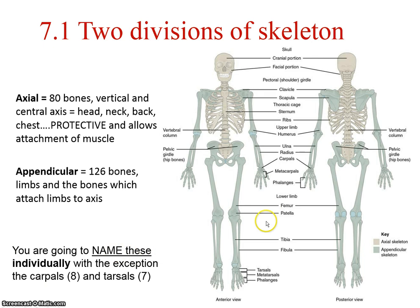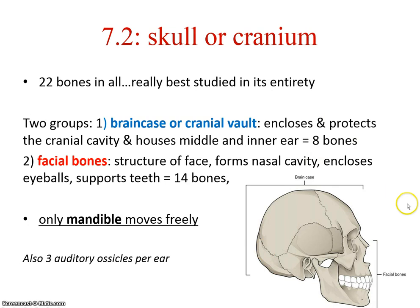You're going to name all of these, so it seems like a lot — take it in small bits. You won't need to name all eight carpals or all seven tarsals. Starting at the top: your skull or cranium in its entirety is 22 bones. This does not include the very small ossicles inside the ear — there are three in each ear. We group them functionally.